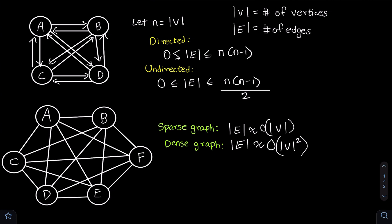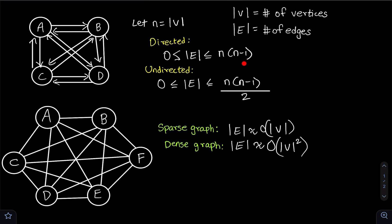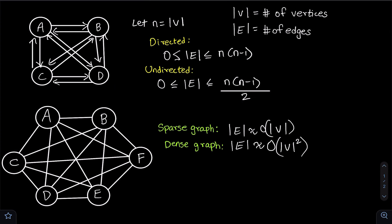The maximum number of edges that a directed graph can have is the number of vertices multiplied by the number of vertices minus 1. In this case the number of vertices is 4, so the number of edges is 12, which is 4 times 3. That's the maximum number of edges a directed graph can have.